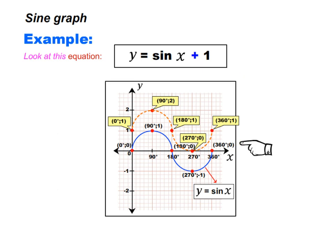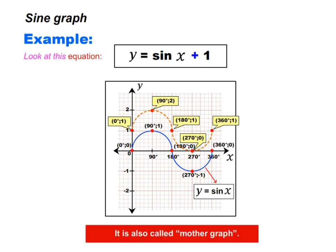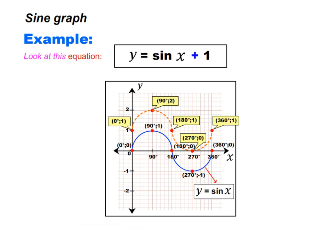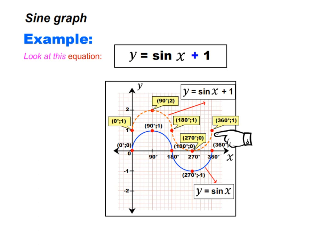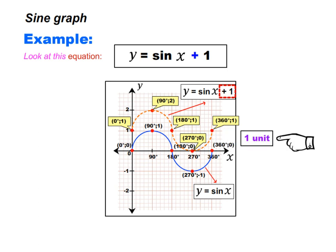Look at the two graphs. The graph with a solid line represents the graph of y is equal to sin x — this is the original graph, called the mother graph. If we shift the mother graph up by 1 unit, we obtain the graph of y is equal to sin x plus 1, shown by the dotted line. So this plus 1 makes the graph go up by 1 unit.